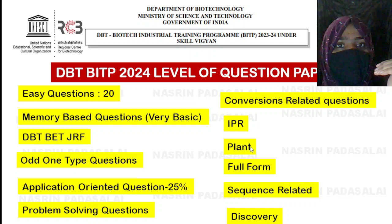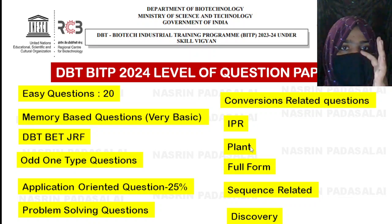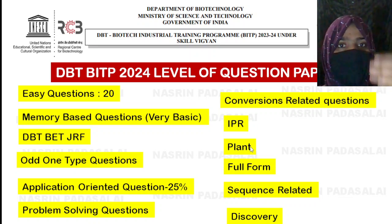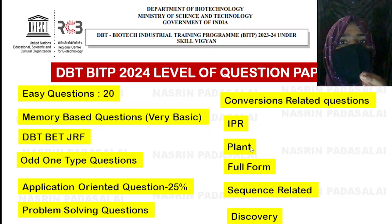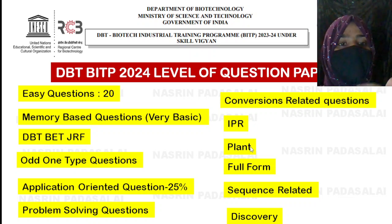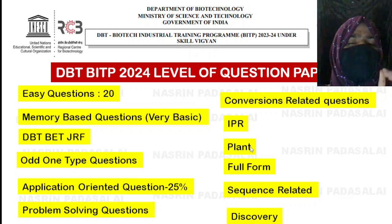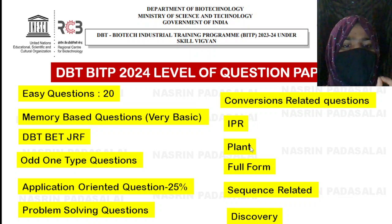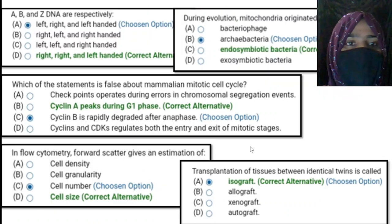You can also find odd-one-out type questions — they give four options and ask you to find the odd one out. Or there will be statement-based questions where they give four statements and ask you to figure out which one is correct or which one is wrong. Next, 25% of the question paper consists of application-oriented or problem-solving questions.